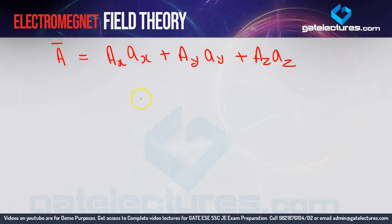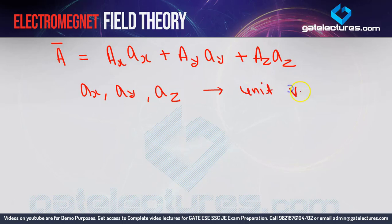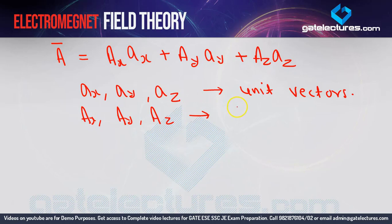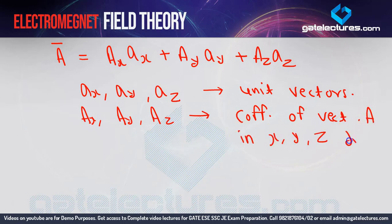These are your unit vectors. The capital AX, AY, and AZ are the coefficients of vector A in the X direction, Y direction, and Z direction respectively. So these are the coefficients of vector A in X, Y, and Z directions.